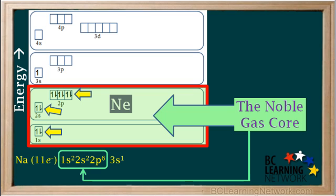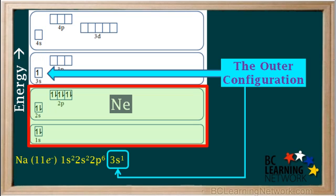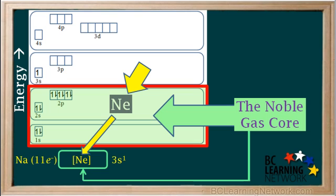We say the noble gas core of sodium is 1s2, 2s2, 2p6, and the outer electron configuration of sodium is 3s1. Since the noble gas core of sodium — 1s2, 2s2, 2p6 — is exactly the same as a neutral atom of neon, we replace this with [Ne] in the configuration. The symbol for a noble gas in square brackets is the convention chemists use to show a noble gas core in an atom's configuration.